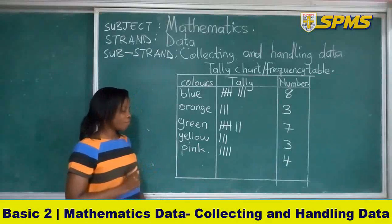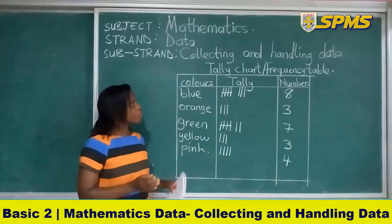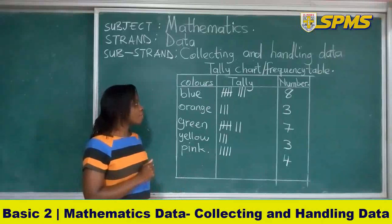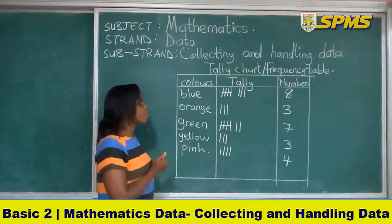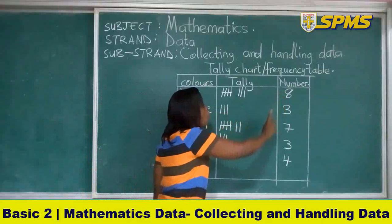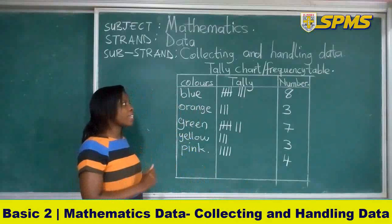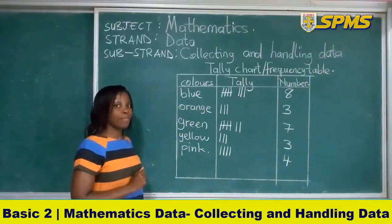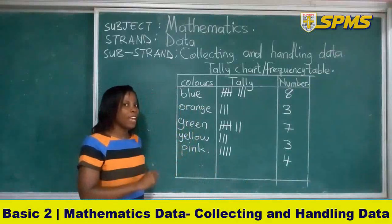The next question: Which color of pencils appeared most? Look at the tally chart once again — which of the colors appeared most? Blue had the highest number of tally, so blue appeared most. They say color, so you don't say the number — you tell the color. Blue appeared most.